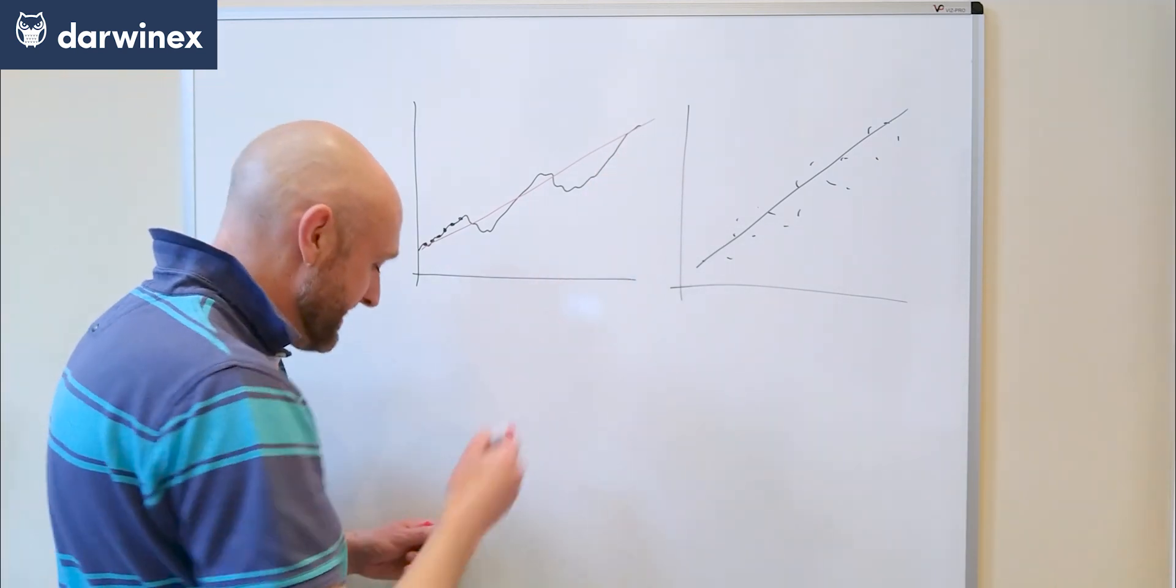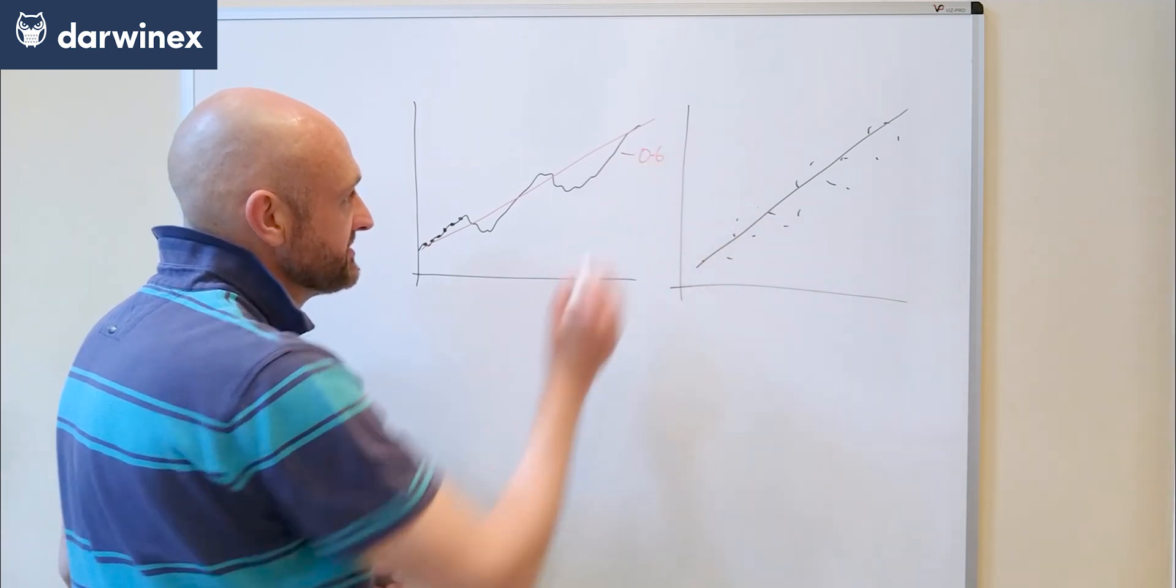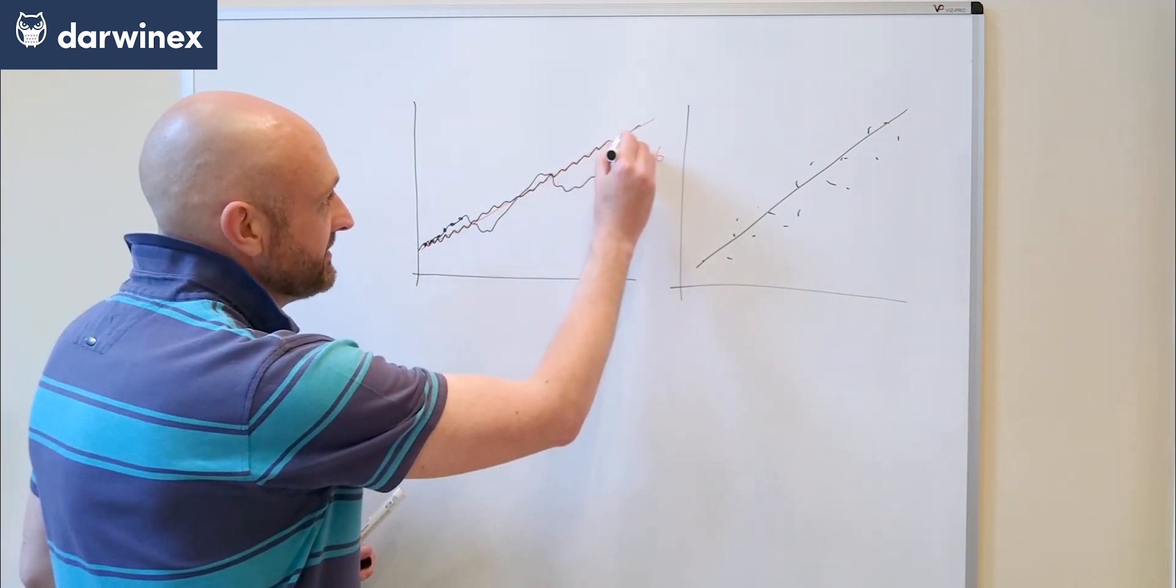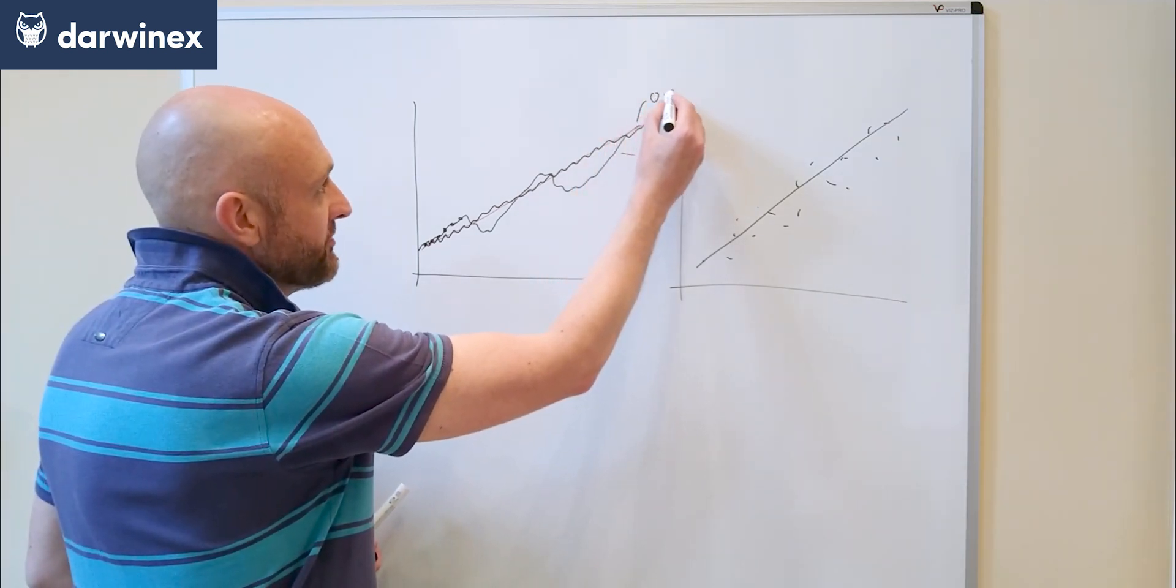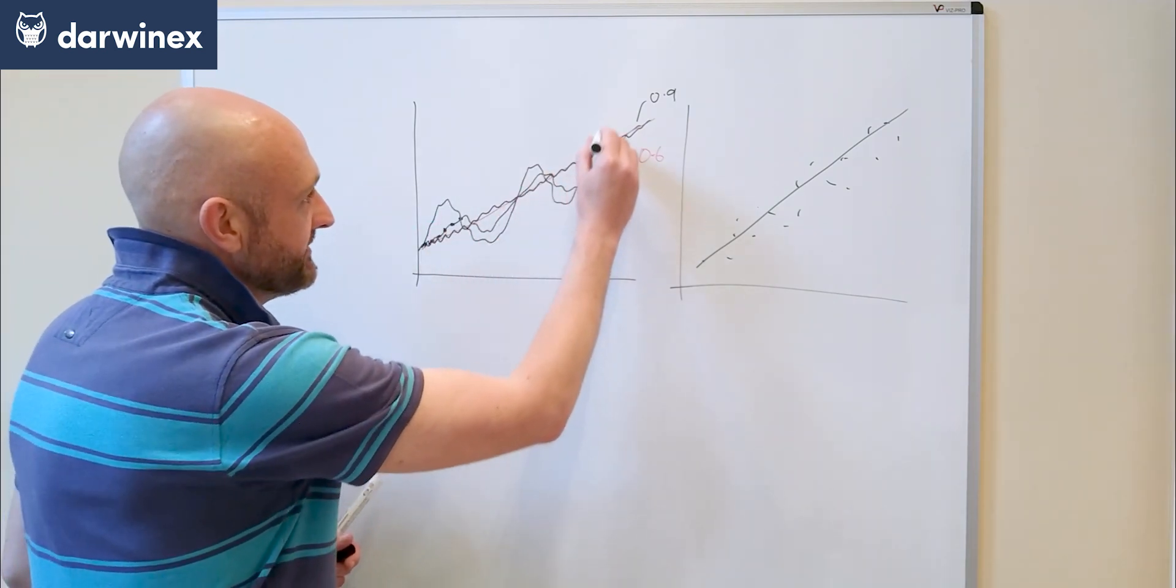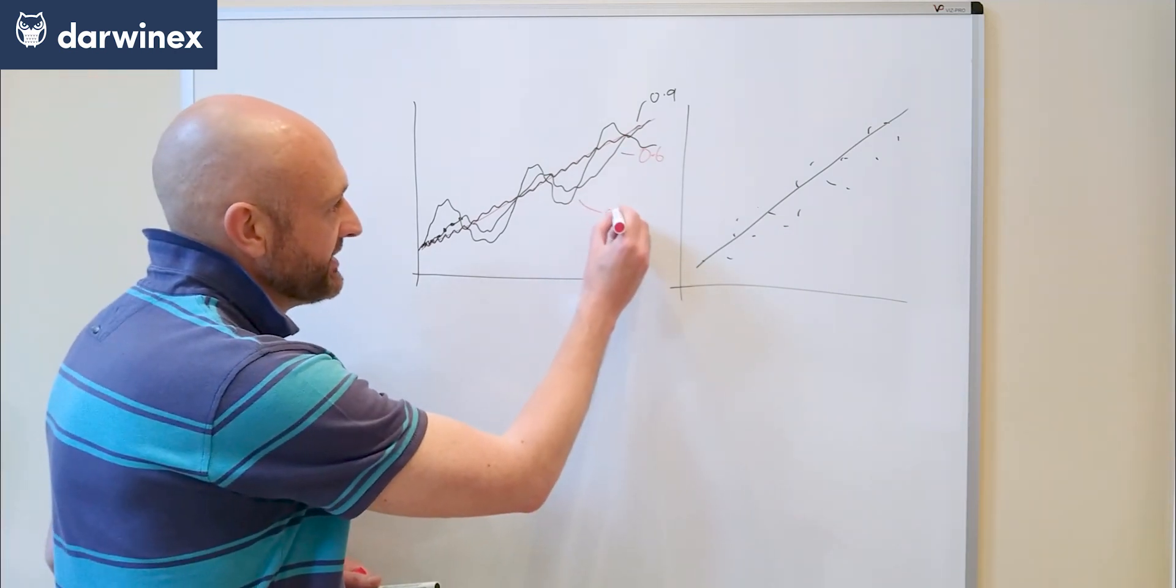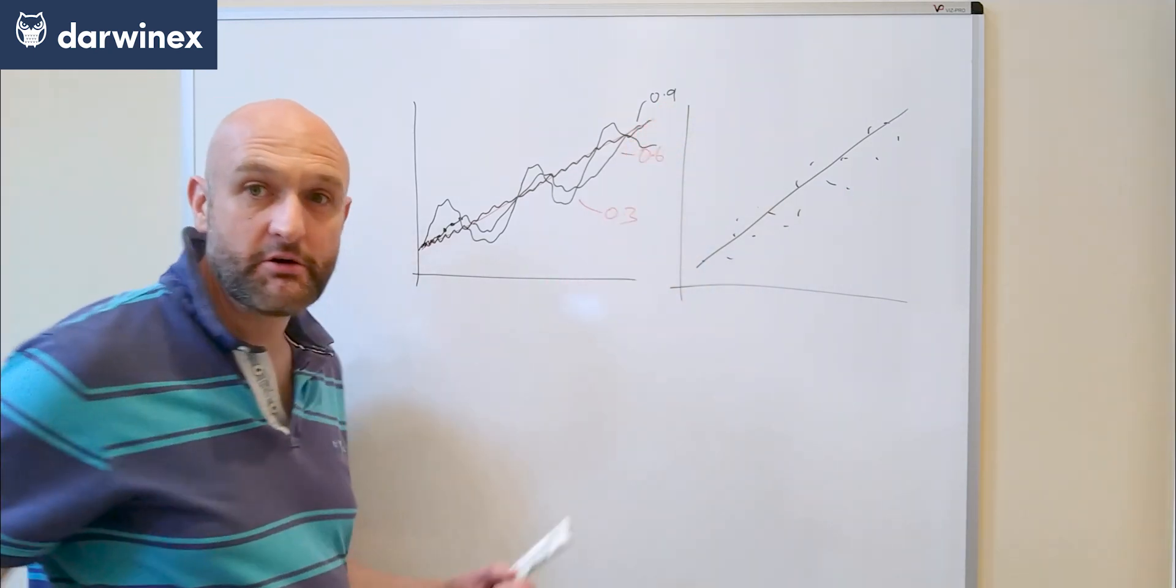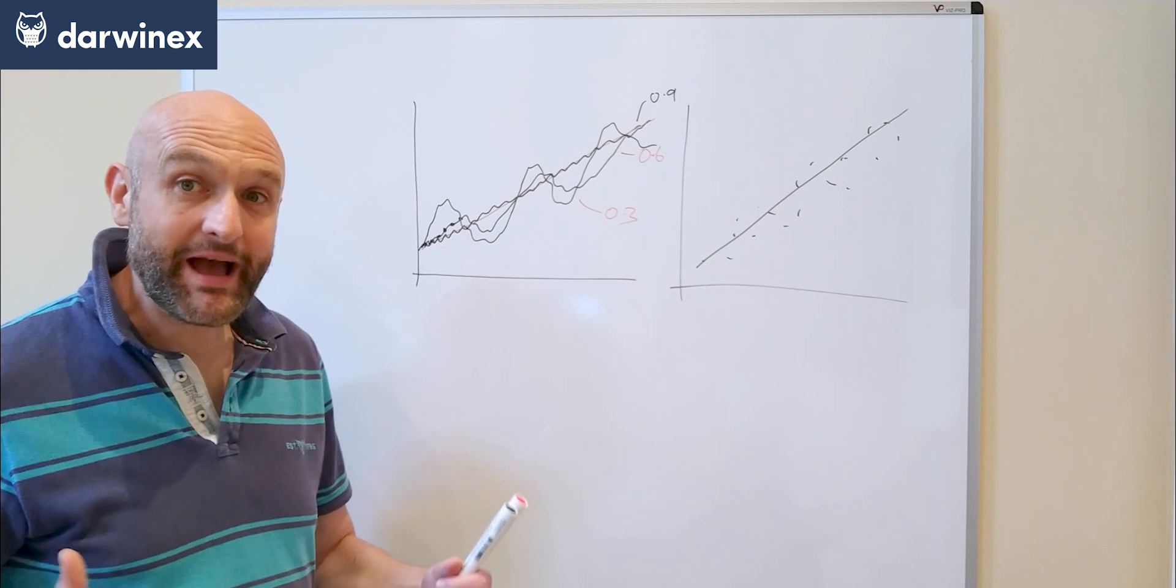It's the coefficient of correlation that will tell us how close our points are to fitting that linear regression line. For example, this line here might have a value of, let's say, 0.6, whereas an equity curve that follows the line much more closely might have a value of 0.9. If we have a line that looks much more erratic like this, that may have a value of 0.3. By looking at the coefficient of correlation, it tells us the quality of our equity curve.